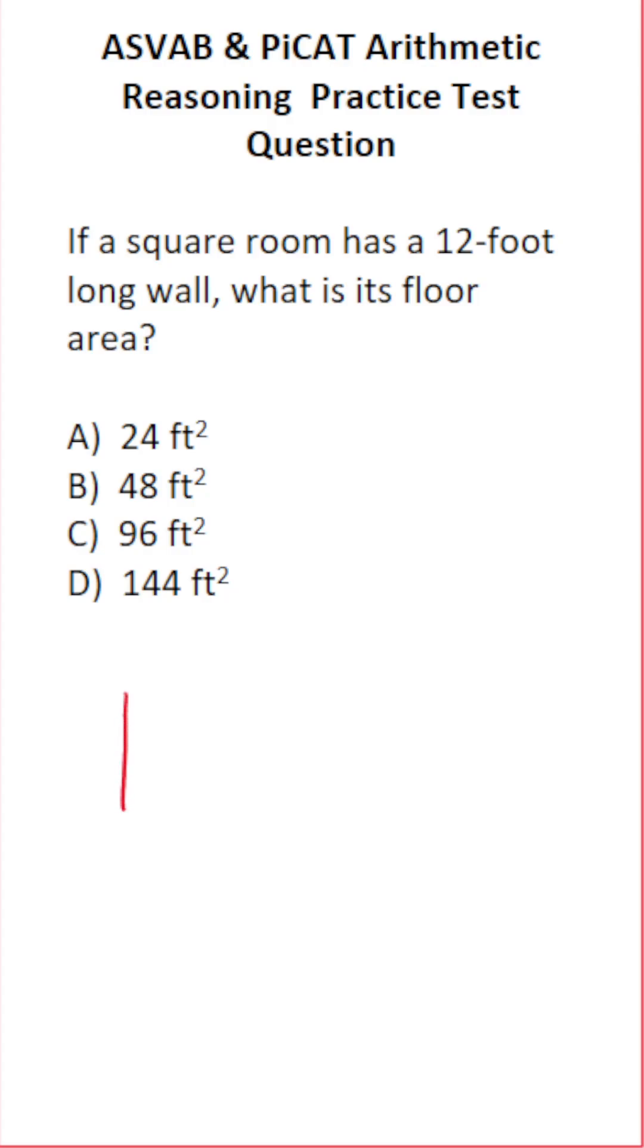If it's helpful, you can make a quick sketch of a square. According to the problem, one of its walls is 12 feet long. Now, one of the properties about squares that you need to know for this test is that all of its sides are equal.